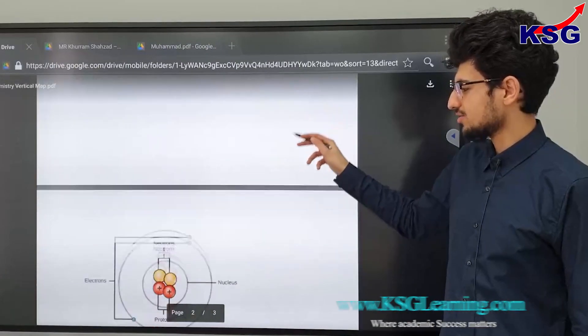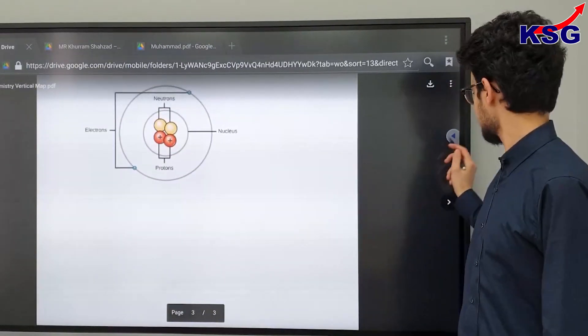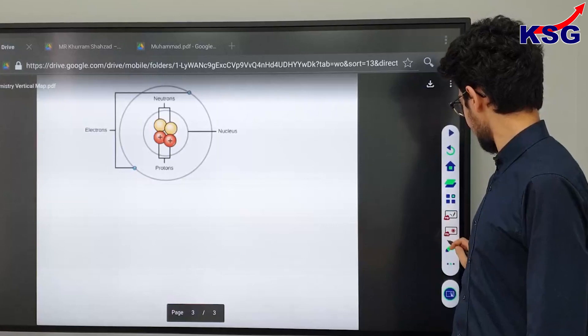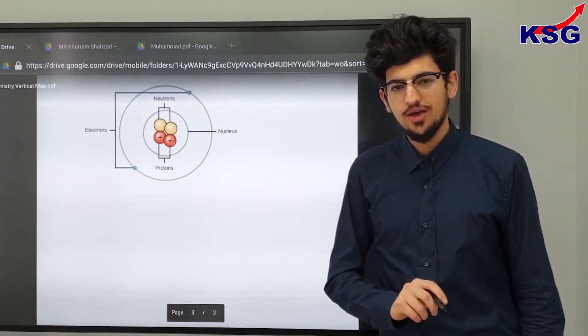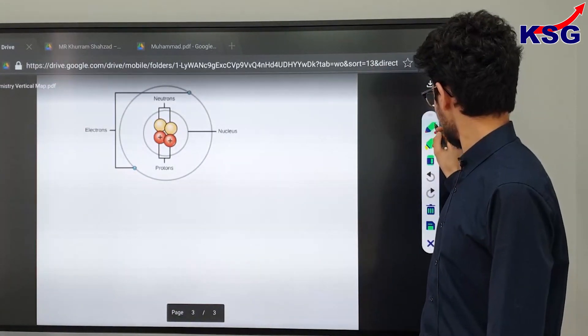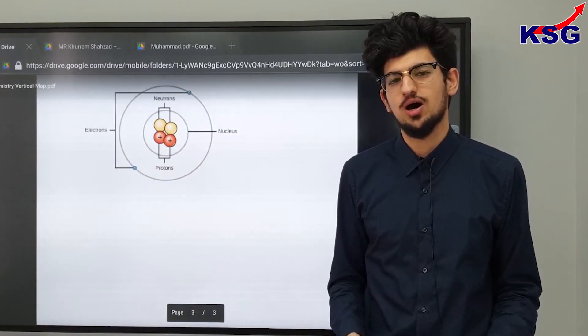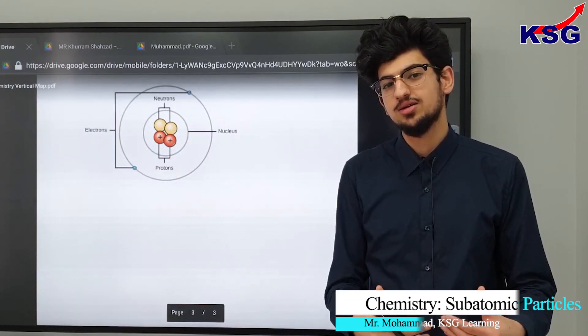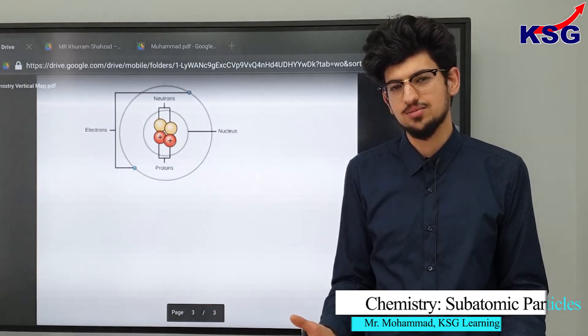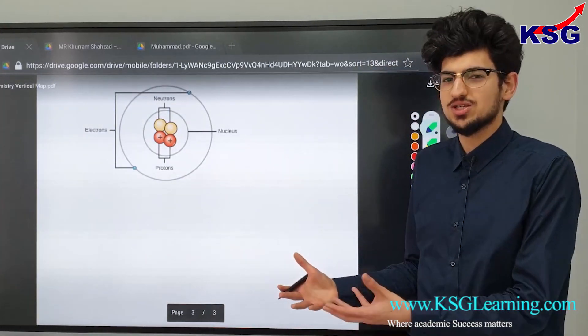Let's learn about subatomic particles. So if we just break down what subatomic particles are, sub means smaller than and atomic is talking about the atom. So here we're just talking about things that are smaller than atoms.